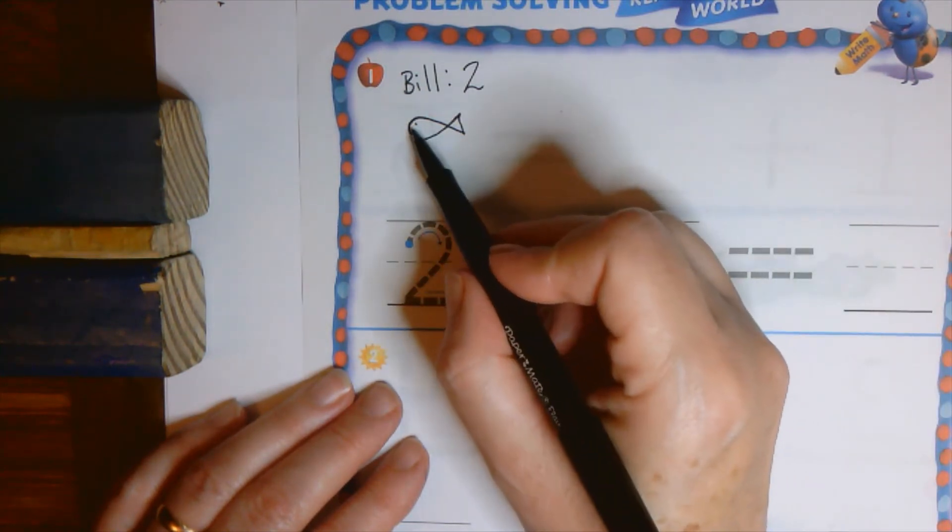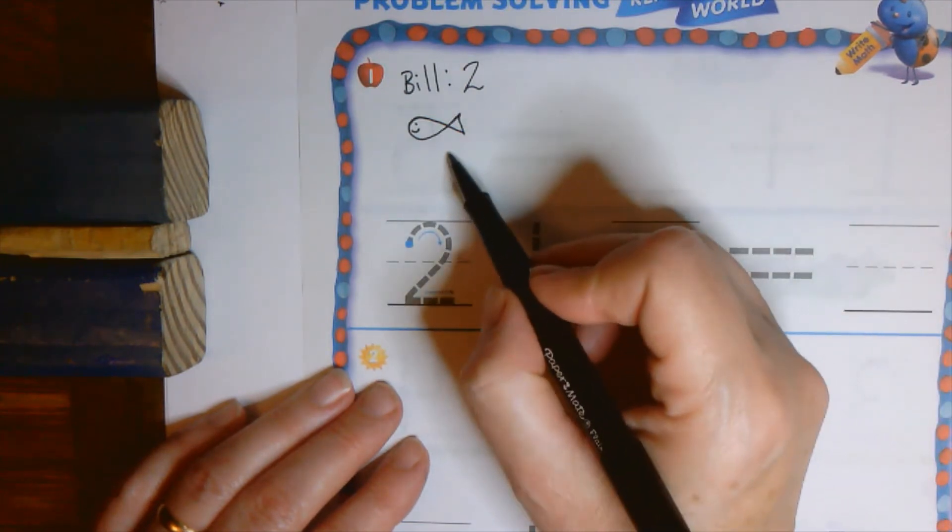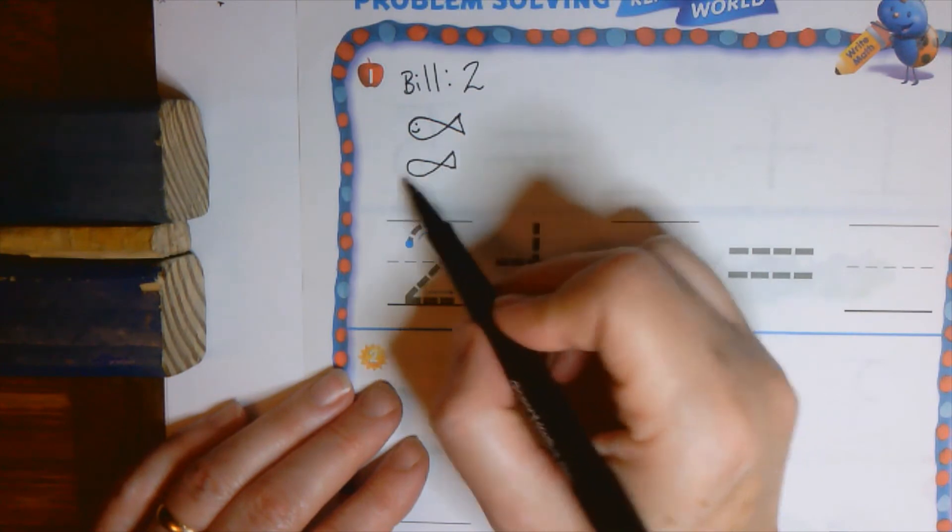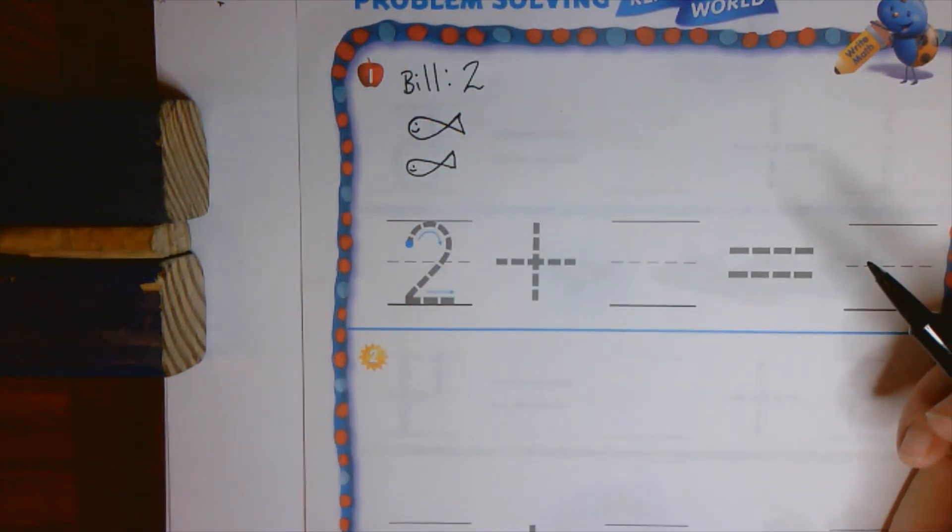You can even give them an eye and a smiley face if you want to. So down, swoop up and around, connect it. There are those two.